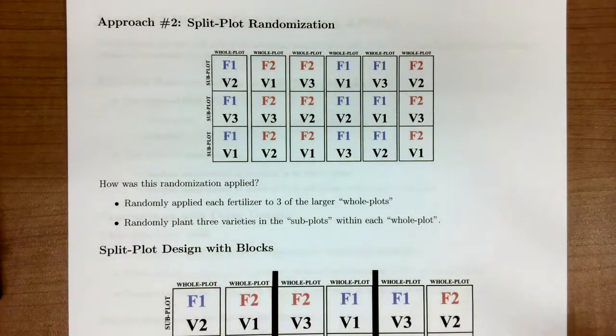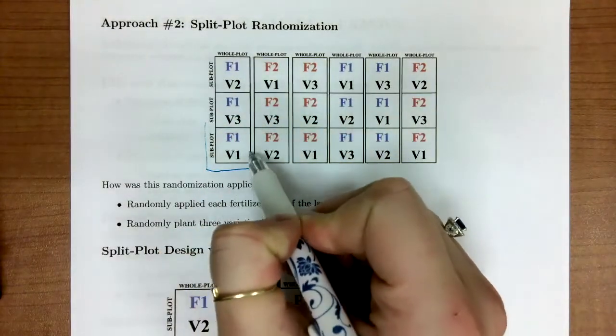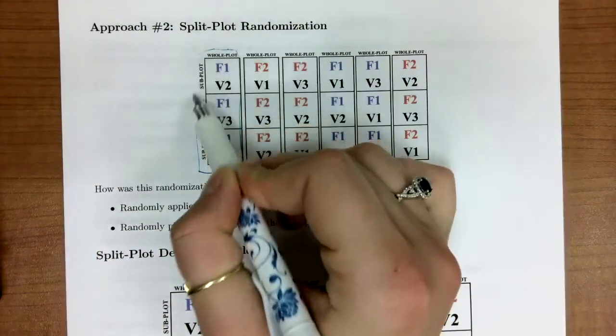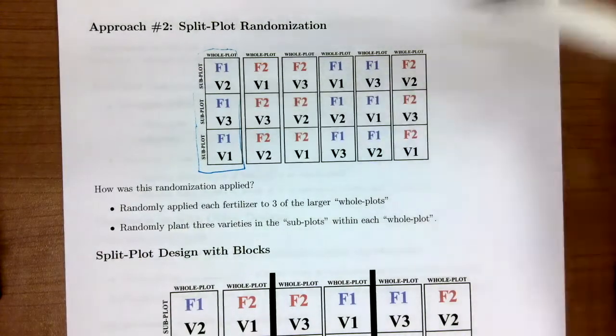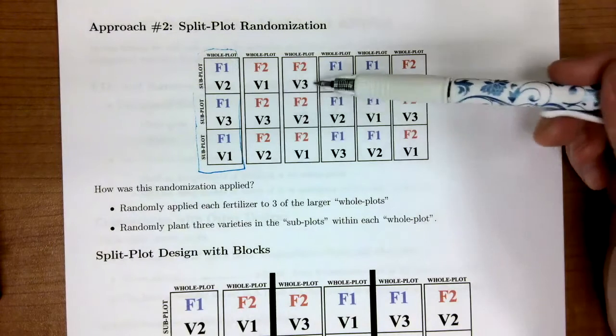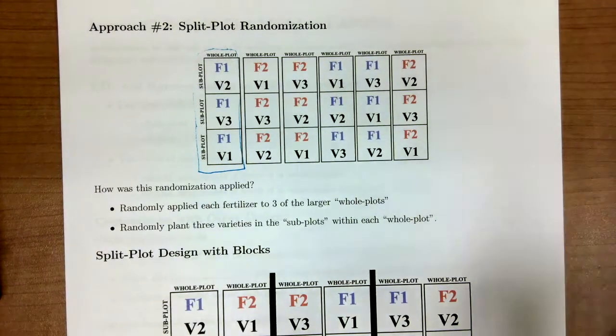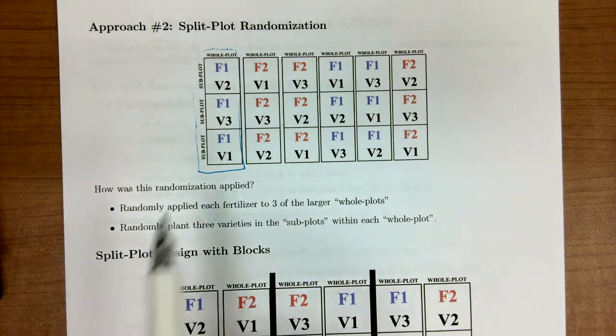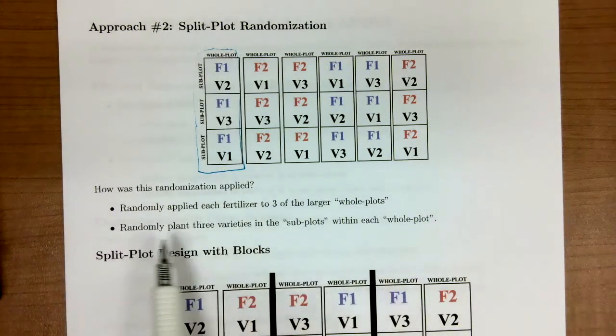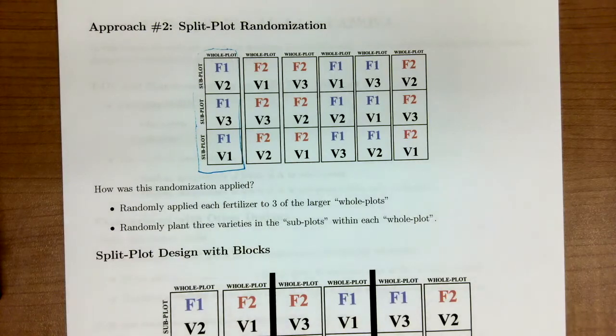Now within this whole plot, we are going to assign variety one, two, or three of the soybean. So we have our whole plots, which we randomly assign the fertilizer, which is the hard to change factor. Then within each whole plot we're going to randomly assign and plant the three varieties of soybeans. These are called our subplots.